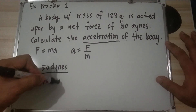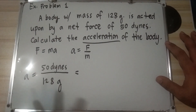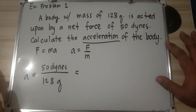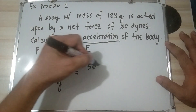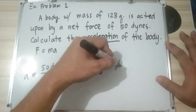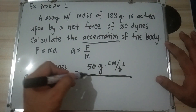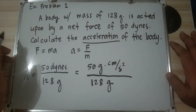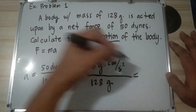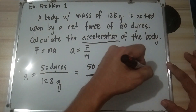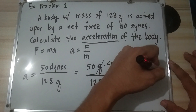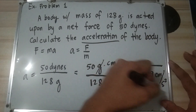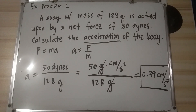We have 50 dynes over 128 grams. Since 1 dyne equals 1 gram-centimeter per second squared, we substitute: 50 gram-centimeter per second squared over 128 grams. Canceling the unit grams, we get 0.39 centimeters per second squared. Therefore, the acceleration of the body is 0.39 centimeters per second squared.